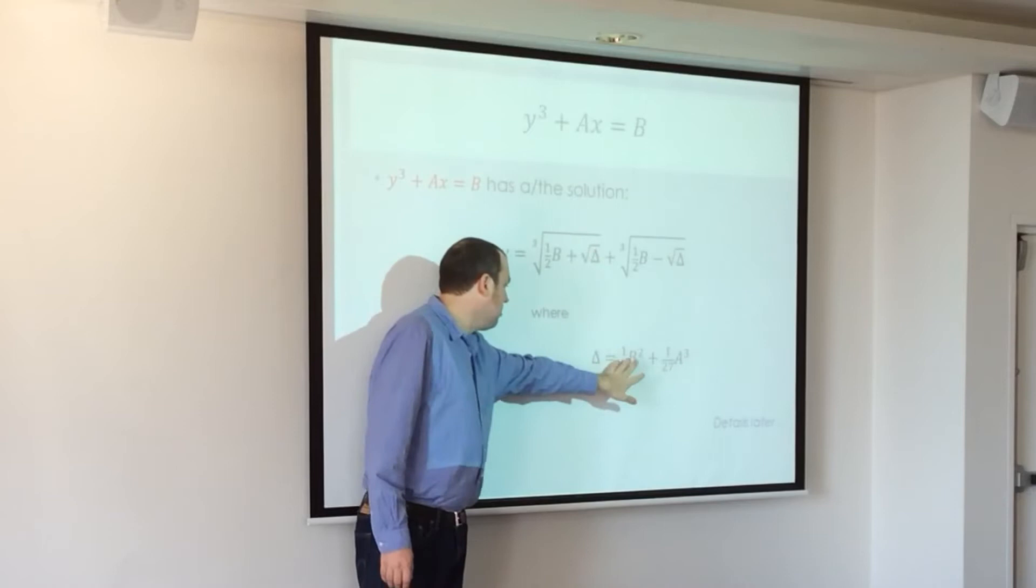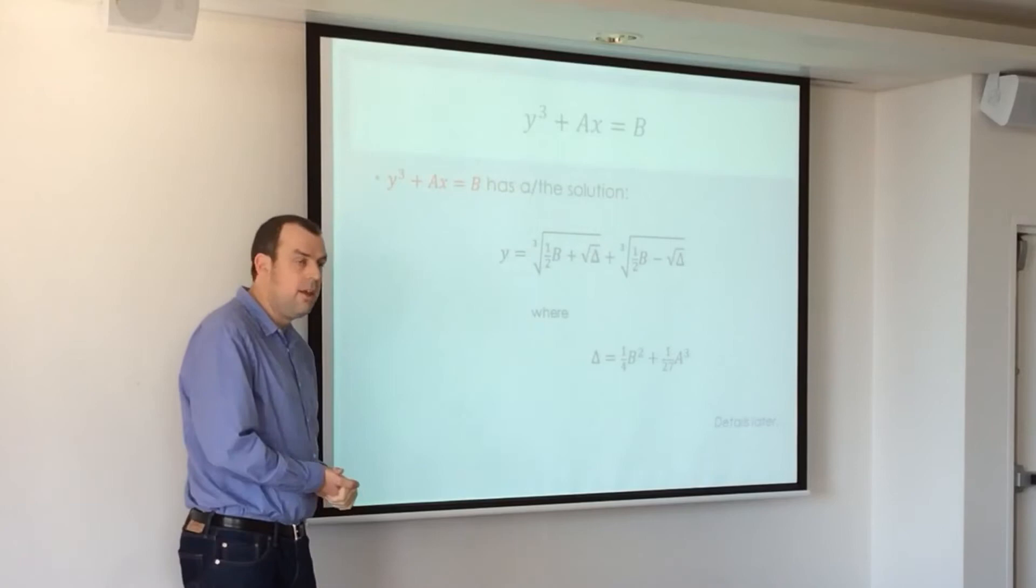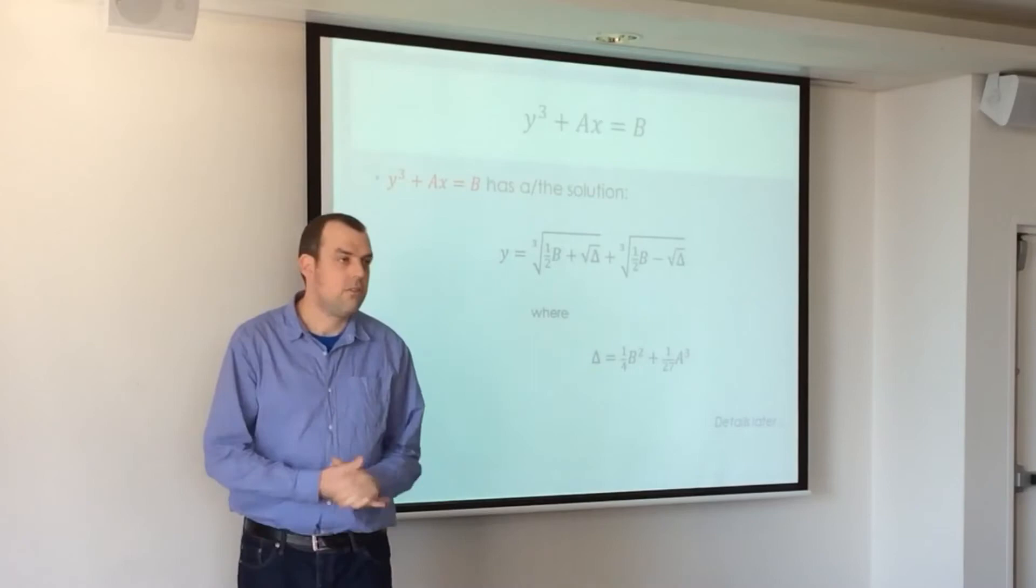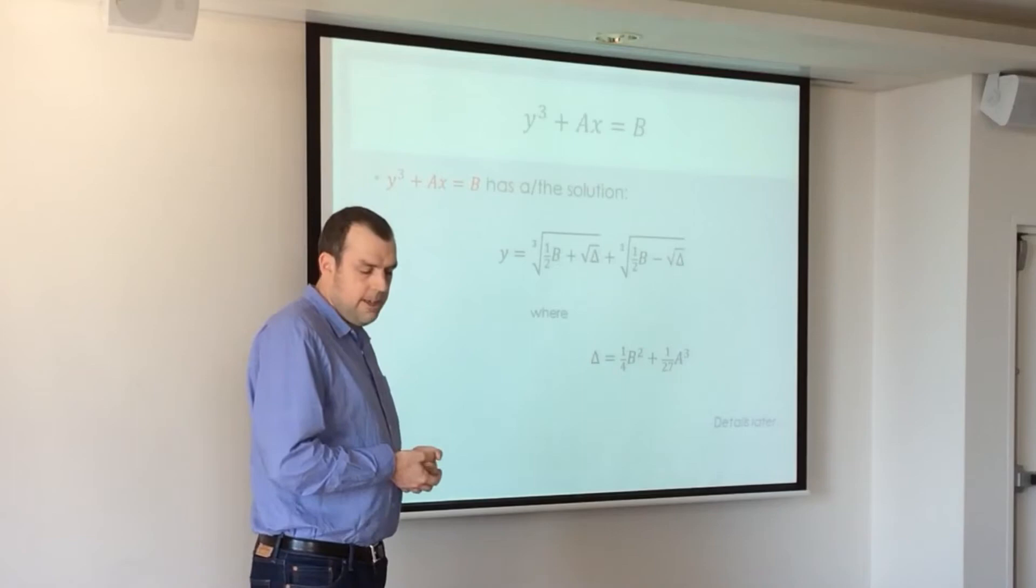So it involves cube roots, nested square roots. This discriminant symbol is that, and the b and a come from your equation. Okay? So there are similarities there with quadratics. This is a discriminant. It does distinguish, like, how many real roots the cubic equation will have.